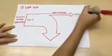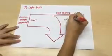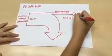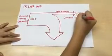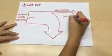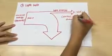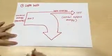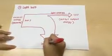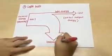This is the Sankey diagram of a light bulb. The input is electrical energy, which is 300 joules. The useful output energy is light energy, which is 120 joules, and the internal energy wasted is 180 joules.